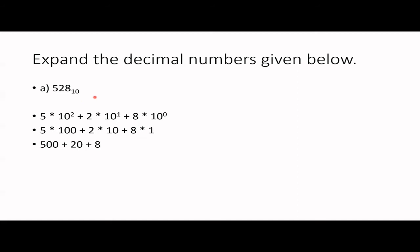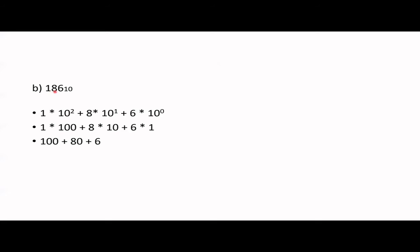Next one: 186, base 10. The weighting factors are 10 to the power 0, 1, and 2. So: 1 × 10² + 8 × 10¹ + 6 × 10⁰. You can remember place values as 1, 10, 100, 1000 — multiples of 10. So 1 × 100 = 100, 8 × 10 = 80, 6 × 1 = 6. Add all three: 100 + 80 + 6 = 186.